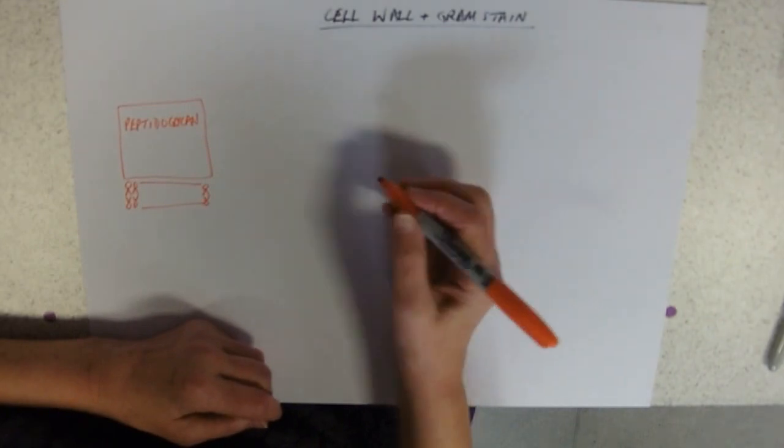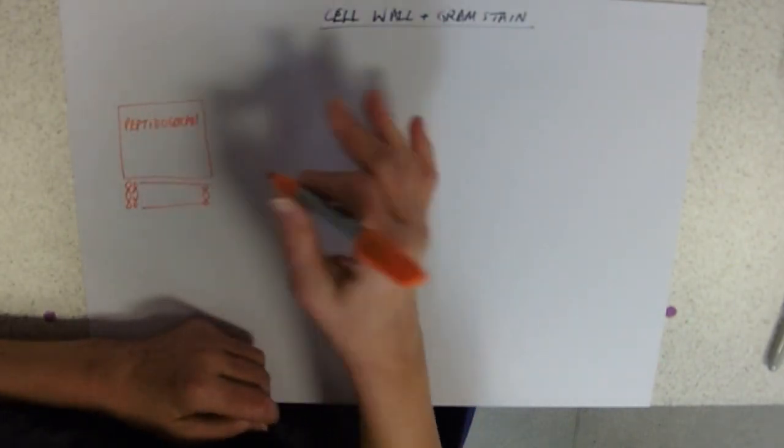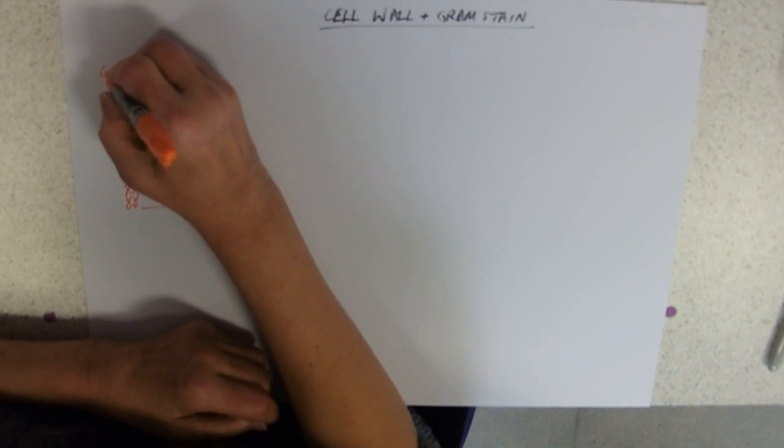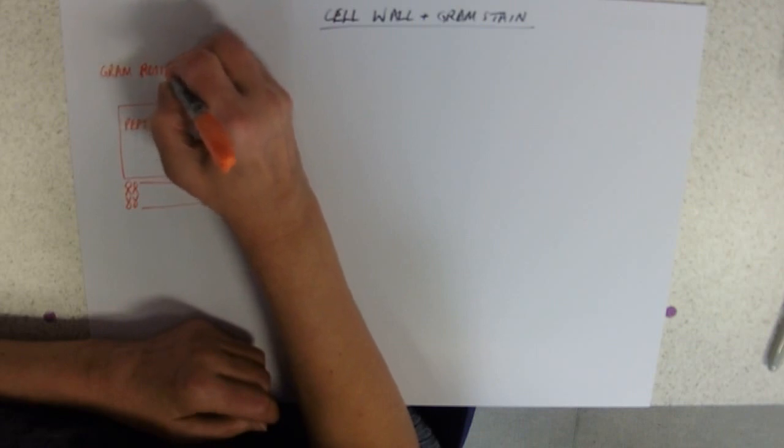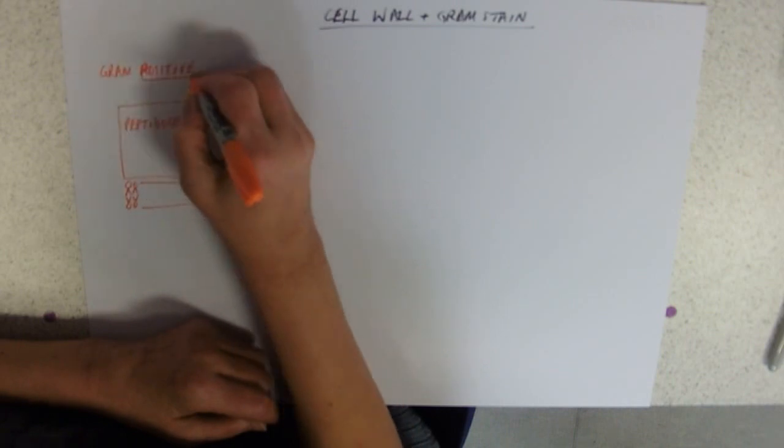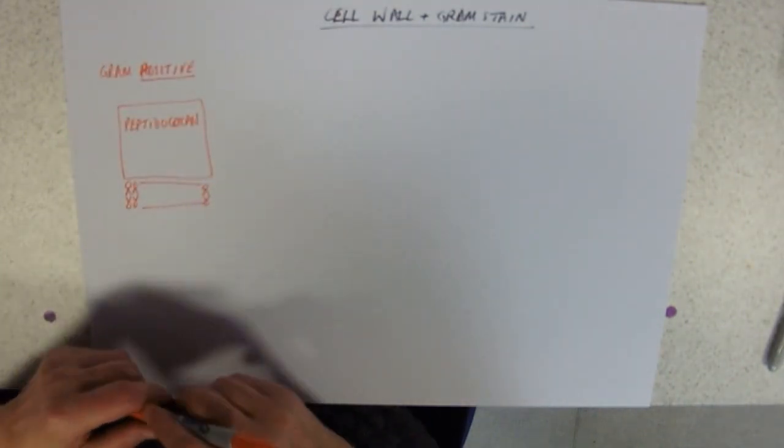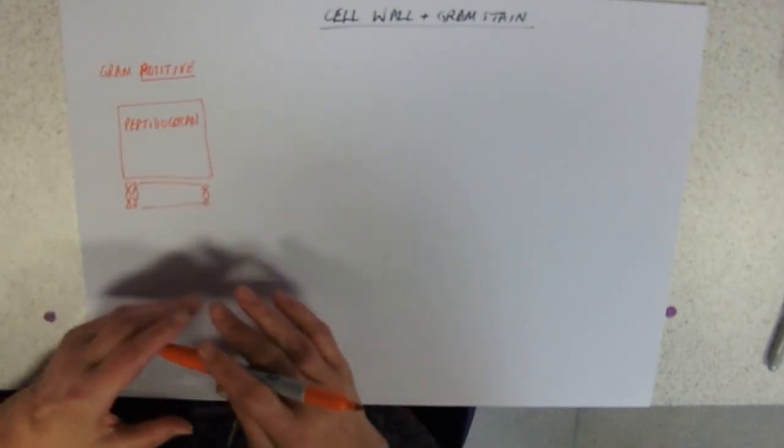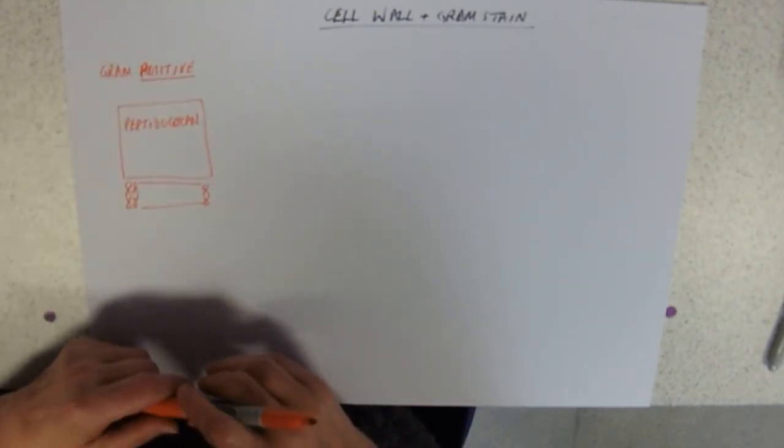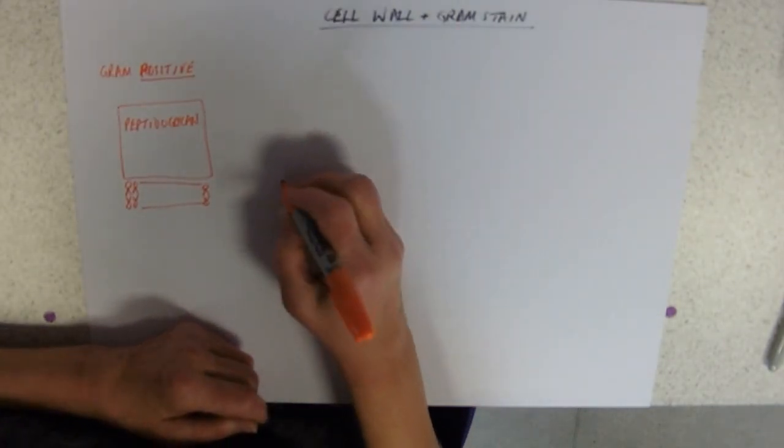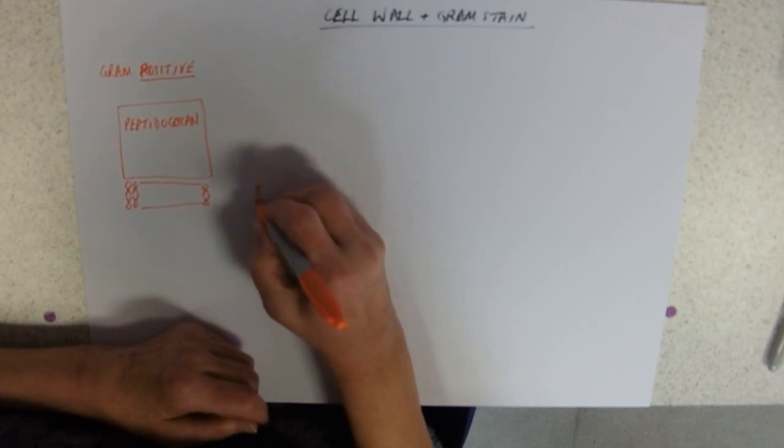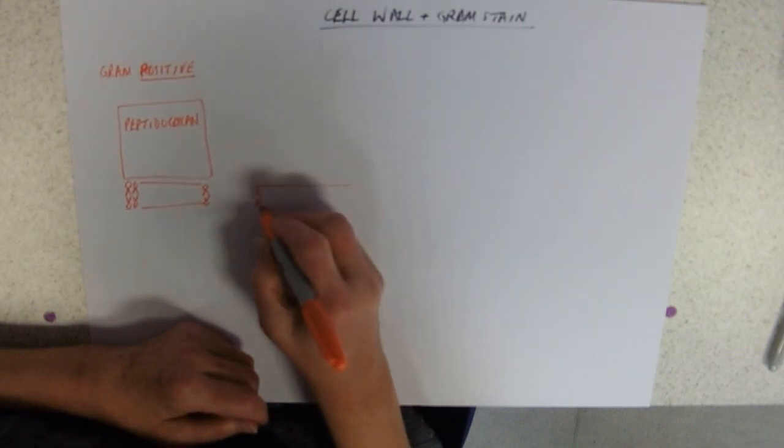That's a basic model of bacterial cell walls. Because of the way that they stain, we call these ones gram positive bacteria. The reason that we do that is because they take up this purple stain that we're going to use for the gram stain.